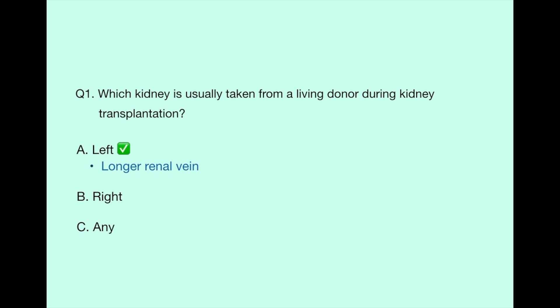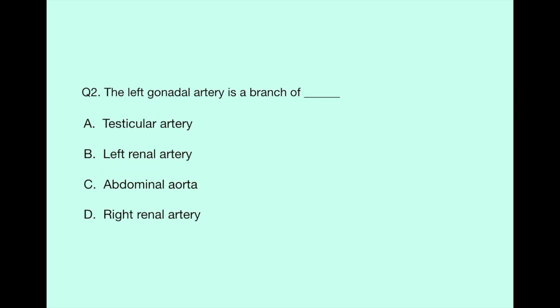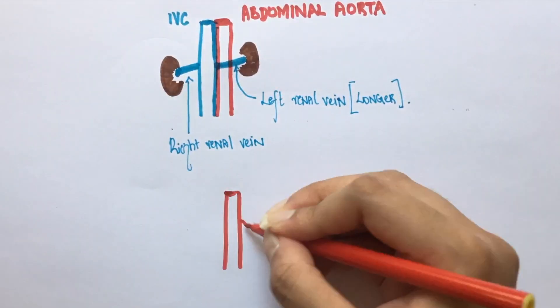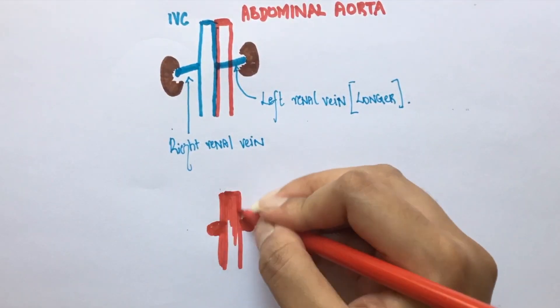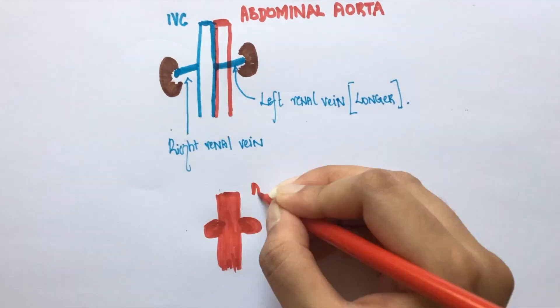Question number two: the left gonadal artery is a branch of the - Option A: testicular artery, Option B: left renal artery, Option C: abdominal aorta, Option D: right renal artery. Gonadal artery is known as testicular artery in males and ovarian artery in females. Both the gonadal arteries are branches of the abdominal aorta.